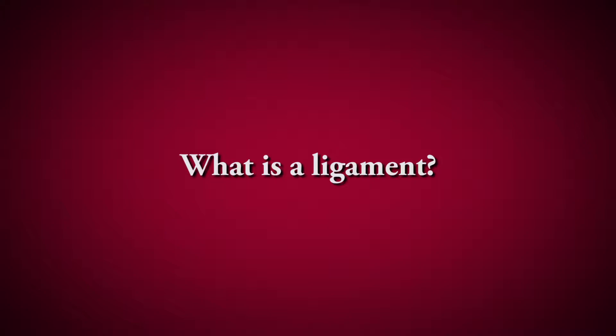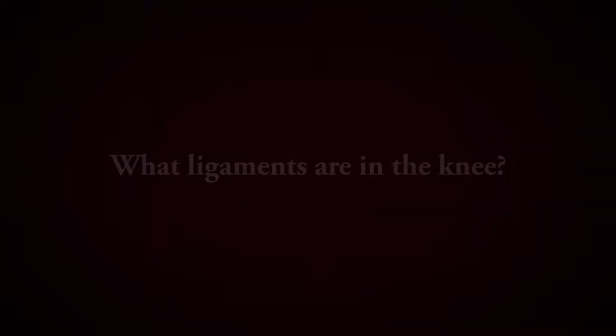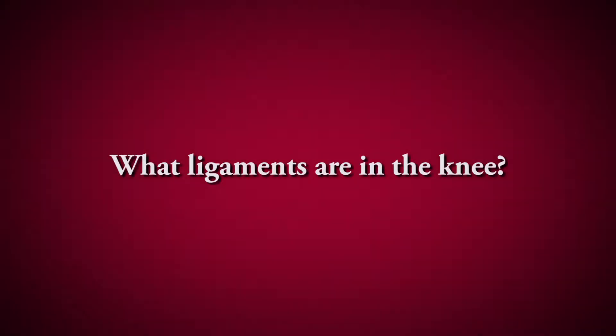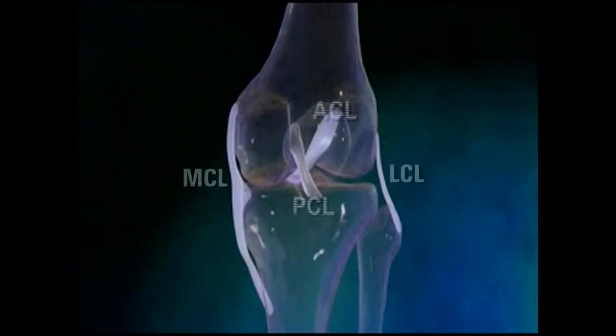A ligament is a soft tissue that connects one bone to another. You'll see ligaments across joints and they help stabilize joints and prevent instability of joints. The knee has four major stabilizing ligaments: the medial and lateral collateral ligaments on the outside, and two central ligaments — the anterior cruciate ligament and posterior cruciate ligament — that help prevent rotation.